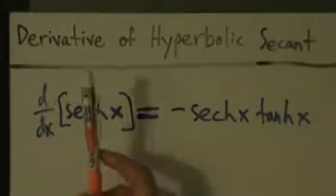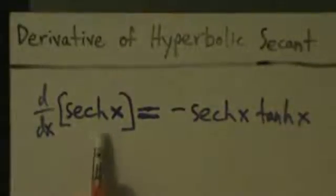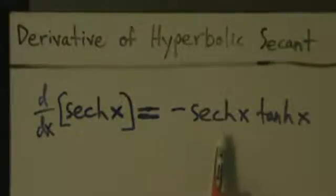In this video we're going to talk about the derivative of the hyperbolic secant function. d/dx of hyperbolic secant of x is equal to negative hyperbolic secant of x times the hyperbolic tangent of x.